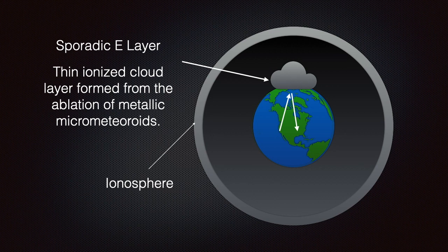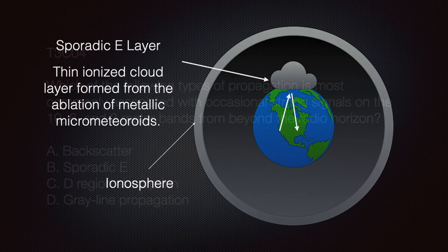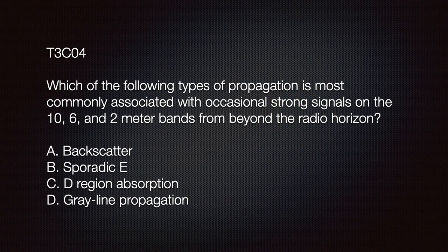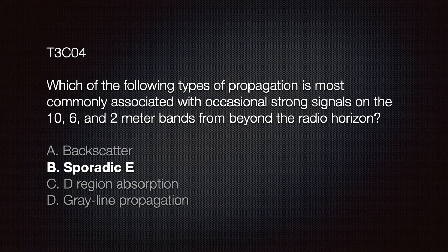On your exam you may see this question: which of the following types of propagation is most commonly associated with occasional strong signals on the 10, 6, and 2 meter bands from beyond the radio horizon? A) backscatter; B) sporadic E; C) D-region absorption; or D) gray line propagation. The correct answer is B — sporadic E.